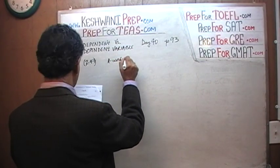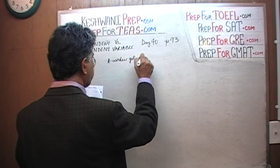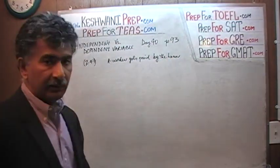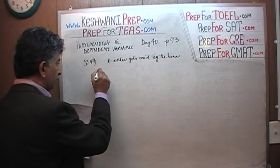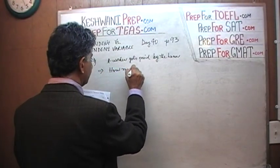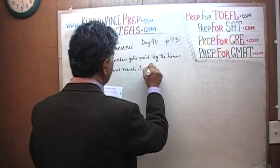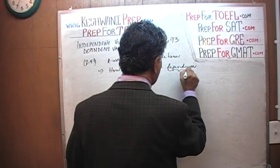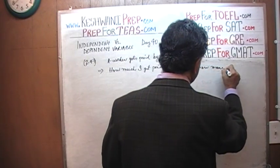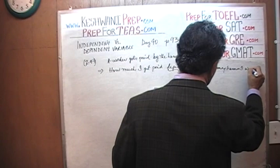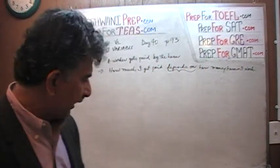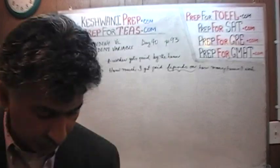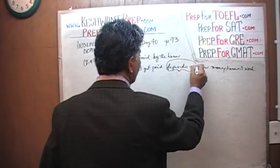In 2.47, they tell us that the worker gets paid by the hour. If we are told that the worker gets paid by the hour, this is the same as saying: how much I get paid depends on how many hours I work. Obviously, that's what it means to get paid by the hour. There is your key word: 'depends on.'